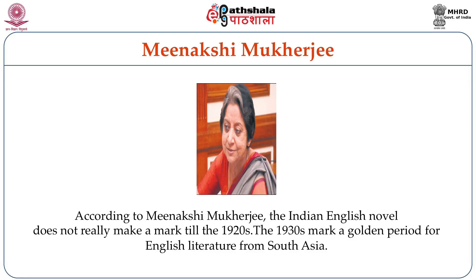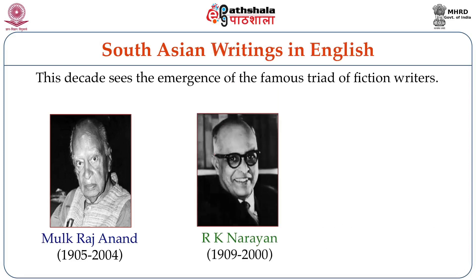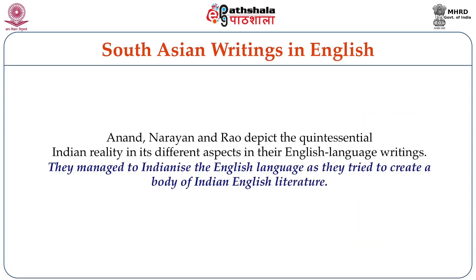Another very important early Indian English novel was Govindo Samanta (1874), written by Lal Bihari Dey. The Indian English novel really begins to make a mark in the 1920s and 1930s — this is what many scholars, including Meenakshi Mukherjee, have opined. The 1930s is a golden period because this decade sees the emergence of the famous triad of Indian English novelists: Mulk Raj Anand (1905–2004), R.K. Narayan (1909–2000), and Raja Rao (1908–2006). All three writers try to depict the quintessentially Indian reality in its different aspects as they write in English, and managed to Indianize the English language.